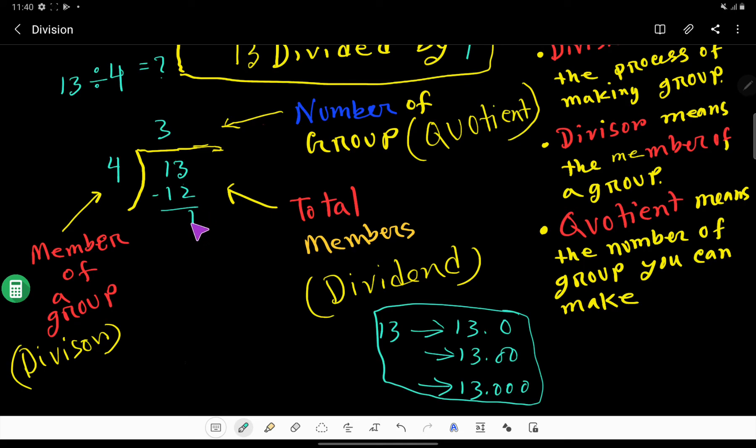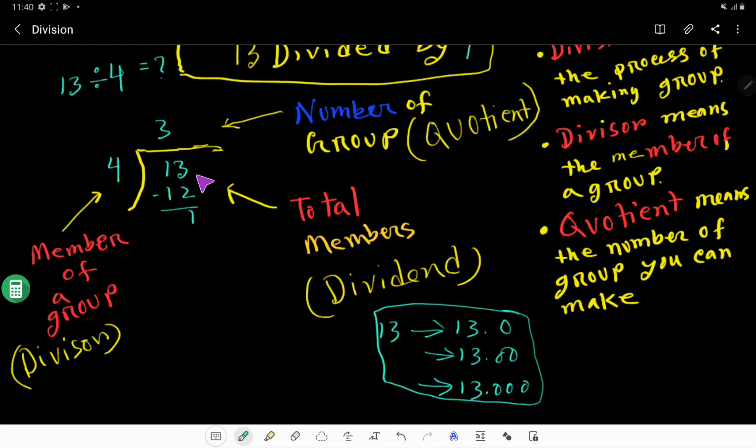The remainder is 1, which is less than the divisor. We will take a decimal point here, and this decimal point also comes in the quotient. After the decimal point, I can take a 0 and bring it down beside 1.